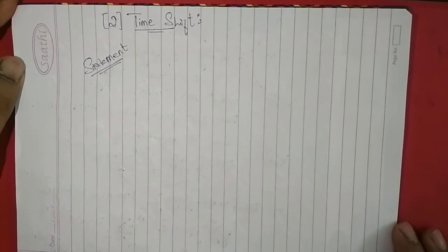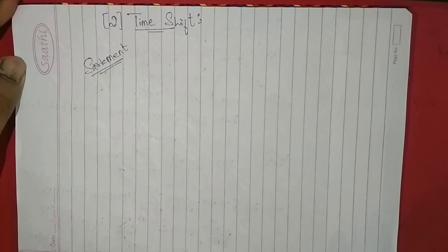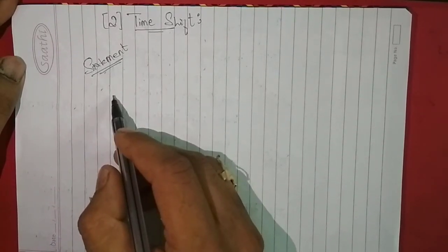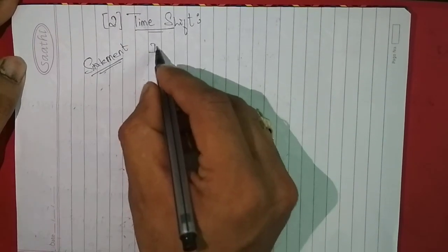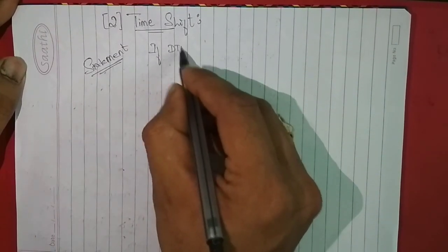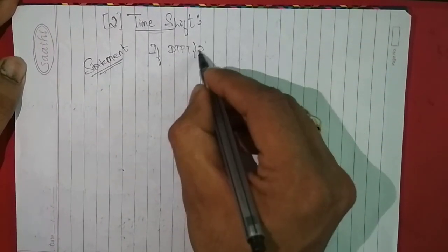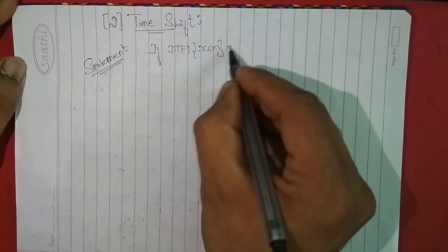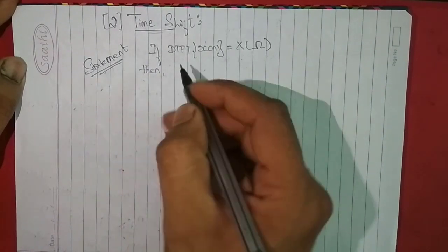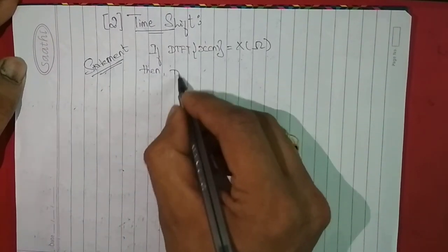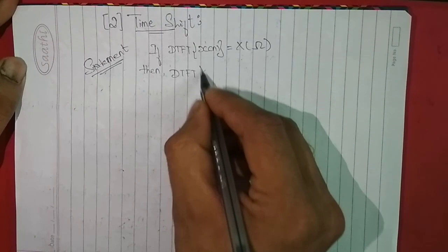We will try to prove the time-shift property of DTFT. Its statement says that if DTFT of x(n) is equal to capital X(ω), then DTFT of